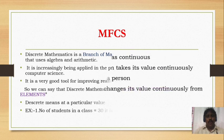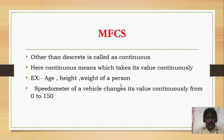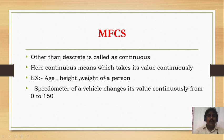Other than discrete is called continuous. Continuous means which takes its values continuously. For example, age, height, and weight of a person or animal — we cannot say exactly how much the age, weight, or height is, as these differ from second to second or hour to hour. So that which changes its value continuously is called continuous.